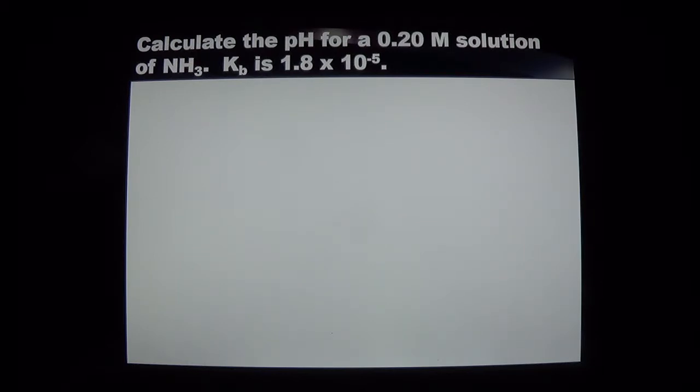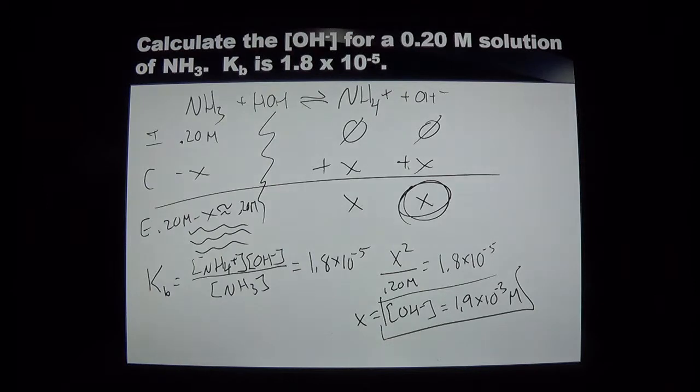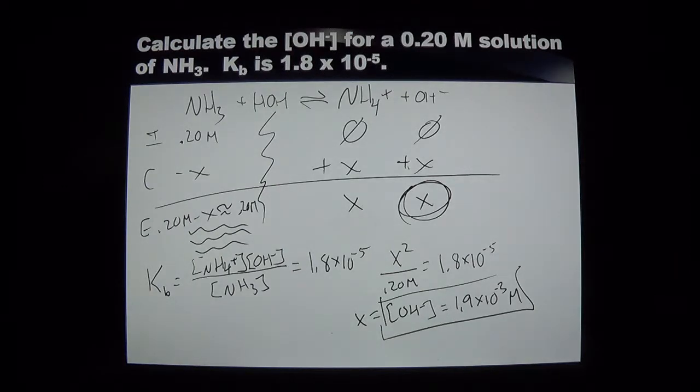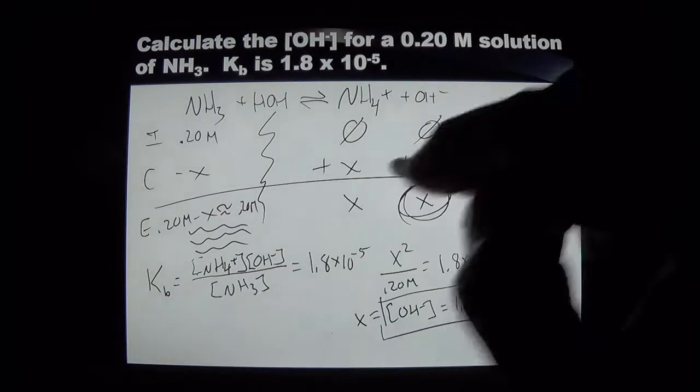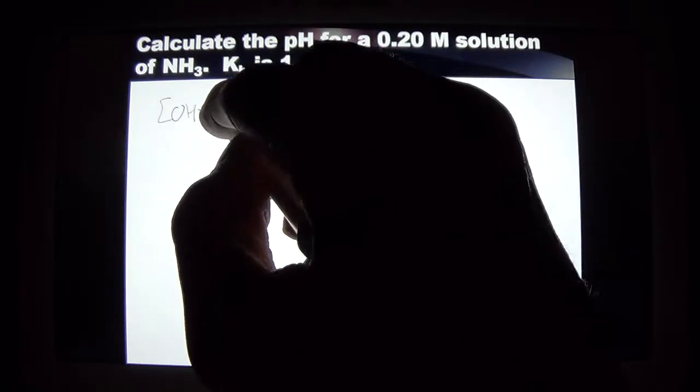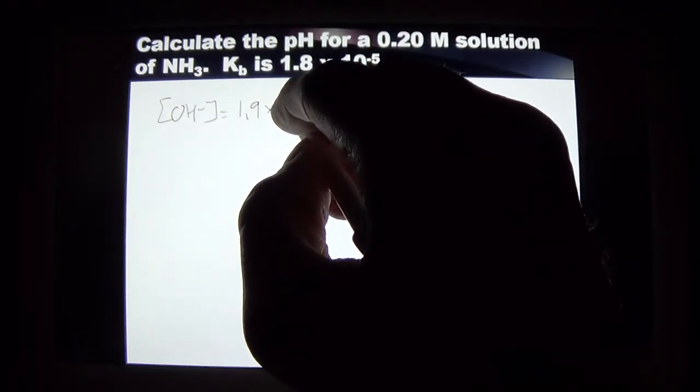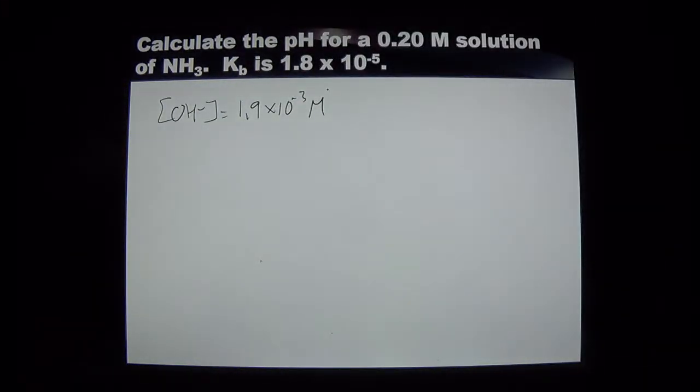I do point this out. 0.2 molarity solution of NH3. KB equals that. 0.2 molar solution of NH3. KB equals that. It's the same problem. So now all I'm doing is going from what I just found to a pH. So don't redo the work if you don't have to. Please, please, please, on the AP test, because it's a timed test. Don't redo the work when you don't have to. This very much would be like maybe part A and part B, and here comes a part C. Now that I know the OH concentration, let's find the pH. So I'm going to rewrite what we had on the last slide just to give us a foundation. 1.9 times 10 to the negative 3 molarity.